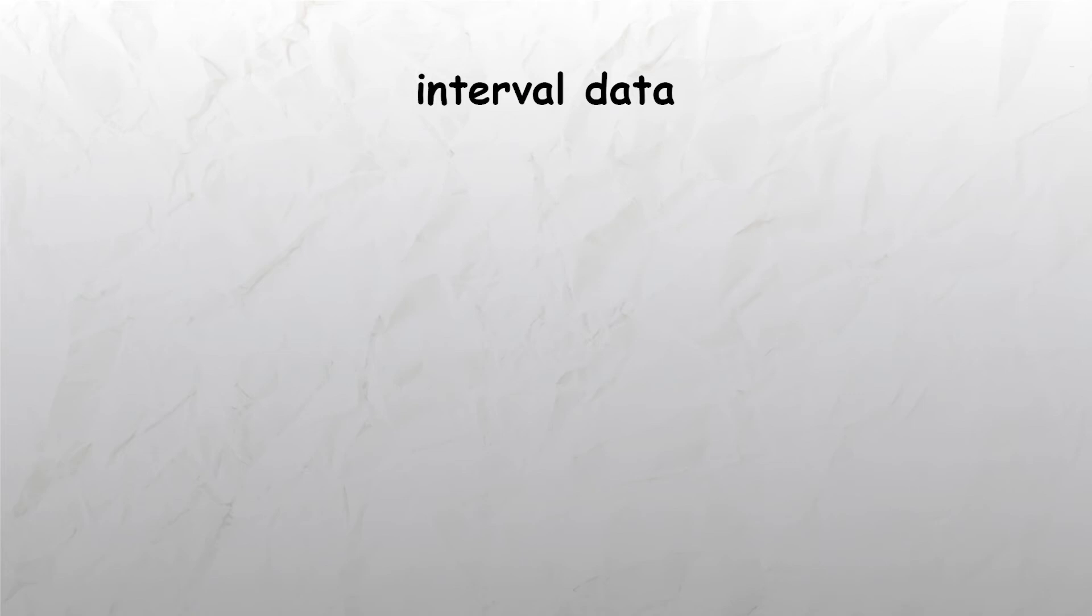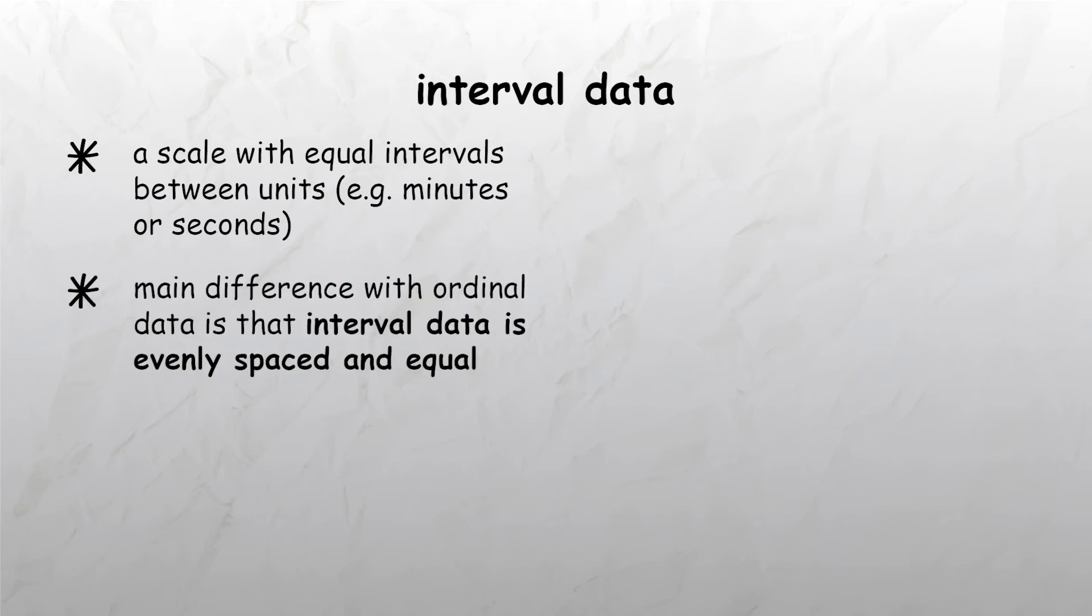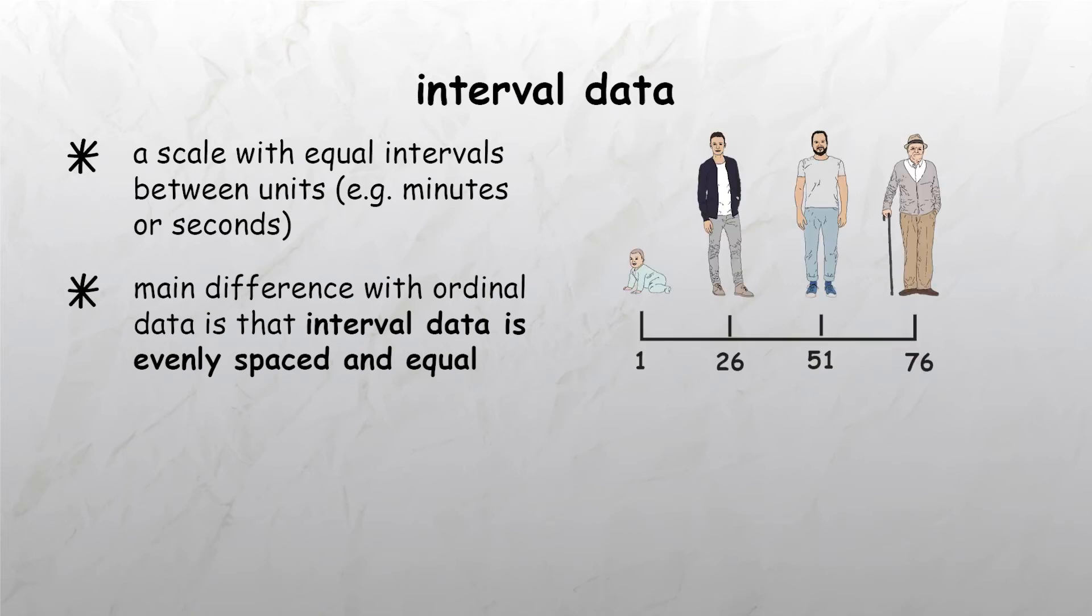The third type of data is interval data, which involves using a scale that has equal intervals between the units, for example minutes or seconds. The main difference between interval and ordinal data is that while with ordinal data we could say a rating of 6 was more than a rating of 5, we can't be sure the difference between 5 and 6 are the same as between 7 and 8. However, with interval data, the points are evenly spaced out and equal.